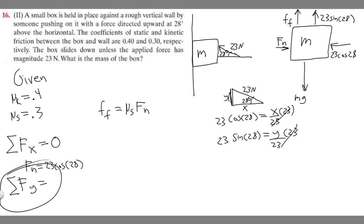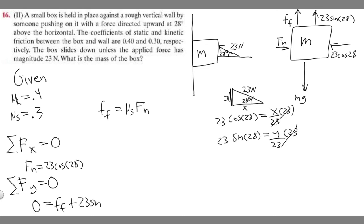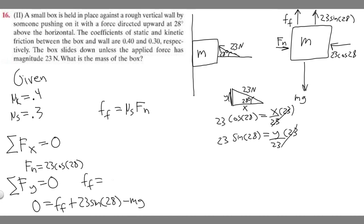For the y-direction, sum of forces also equals zero. We have the friction force F_f going up (positive), plus 23 times the sine of 28 going up (positive), minus mg going down (negative). Rearranging, F_f equals mg minus 23 times the sine of 28.